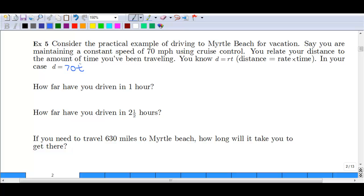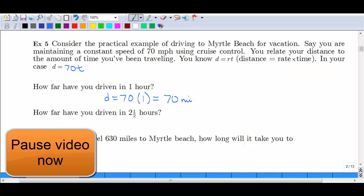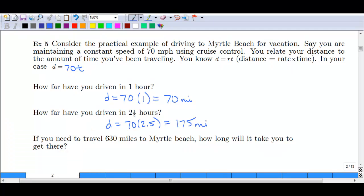How far would we have gone in one hour? Well, D is equal to 70 times one hour. We get that we had gone 70 miles approximately. How far would you have driven in two and a half hours? Pause the video here and find how far you would have driven in two and a half hours. We always want to make sure that we have our units. You would have driven 175 miles.